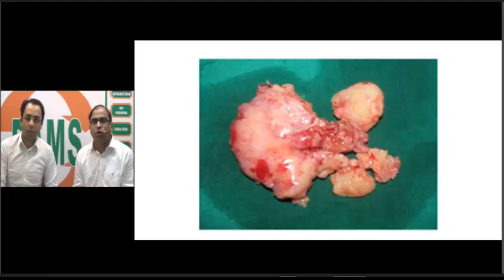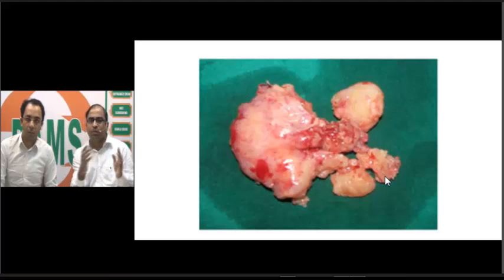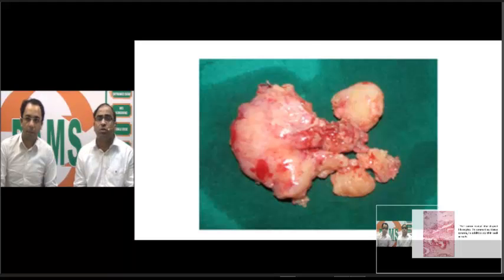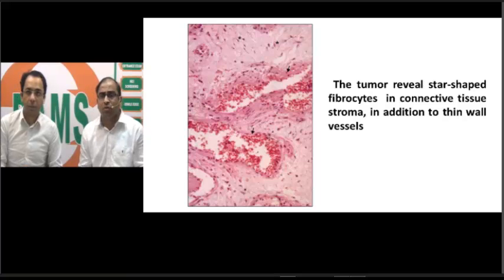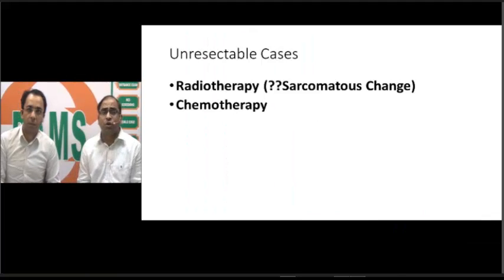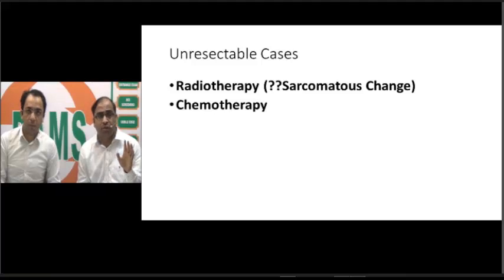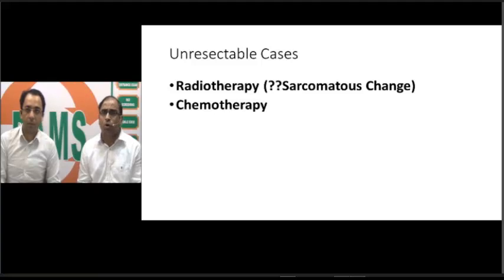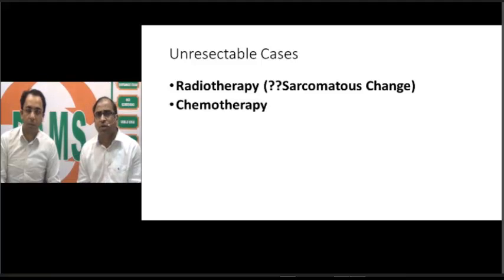This is a surgical specimen where the tumor has been removed in total. The tumor must always be removed completely because removing it in pieces carries a high risk of bleeding. On histopathological examination, star-shaped fibrocytes are seen in the connective tissue with thin blood vessels in the peripheral area. For unresectable cases where surgery is not possible, radiotherapy or chemotherapy can be used, but it is important to note that in angiofibroma there is a very high risk of sarcomatous change after radiotherapy.